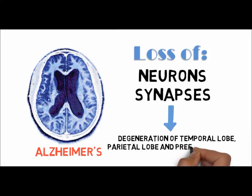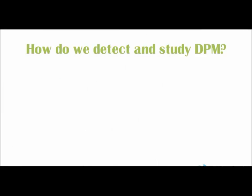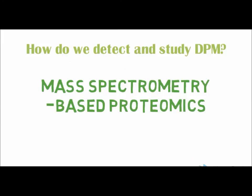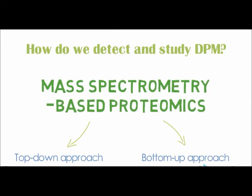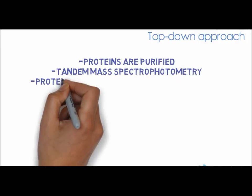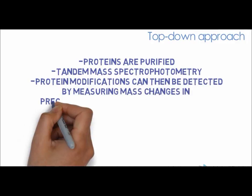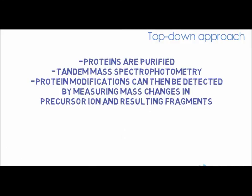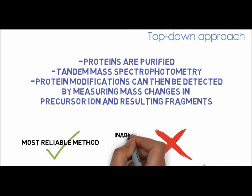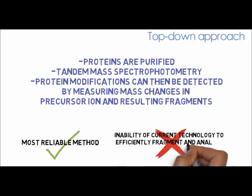You may ask how we are able to detect and study the degenerative protein modifications. The answer is by using mass spectrometry-based proteomics. There are two approaches: the top-down approach and the bottom-up approach. In the top-down approach, intact proteins are purified and run through tandem mass spectrometry. Protein modifications can then be detected by measuring mass changes in precursor ions and resulting fragments. While it is a reliable method, current technological limits are unable to fragment and analyze large protein ions efficiently.